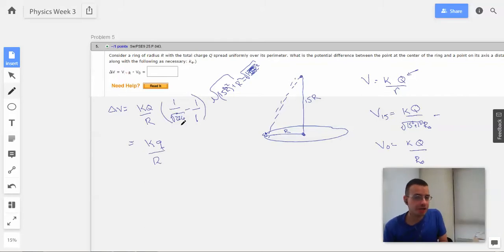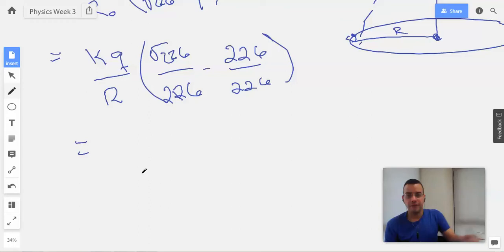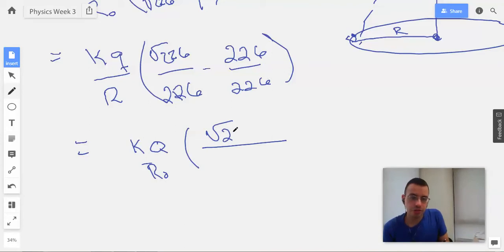And there was an R₀ on the bottom here, I just pulled it out because it was in both of them. Multiply this by square root of 226 on the top and bottom over 226. Multiply one over one could be whatever we want. So the more formal way to write this would be KQ over R₀ times square root of 226 minus 226 over 226.